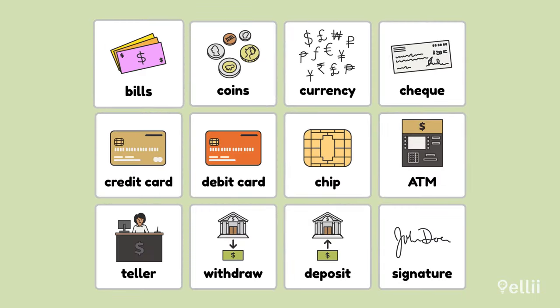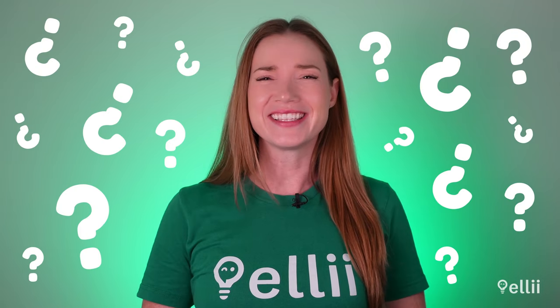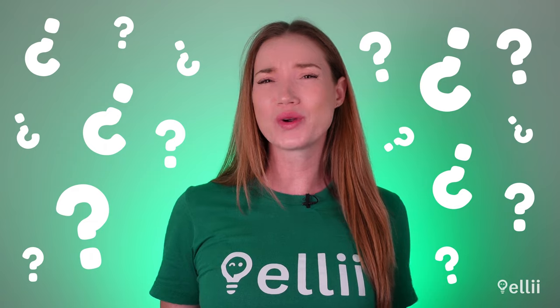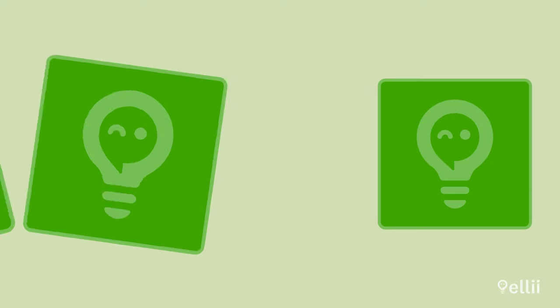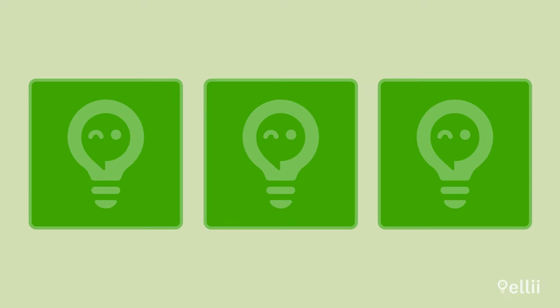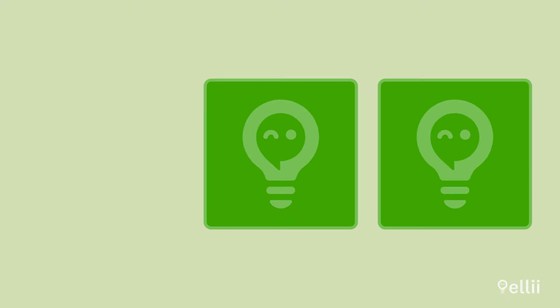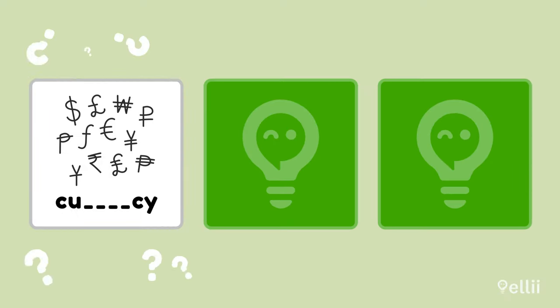You've learned 12 new words to use the next time you're at the bank. Now it's time to practice and see how many words you can remember. Let's try a spelling activity first. Do you remember how to spell this word? Write it down on a piece of paper or say the letters out loud.